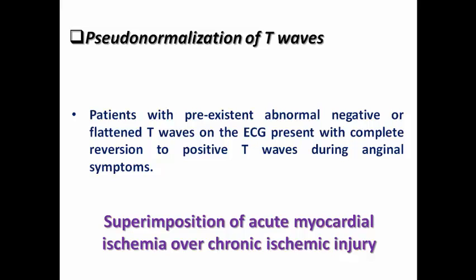So he has a superimposition of acute myocardial ischemia over chronic ischemic injury. Most probably this patient had chronic ischemia and then when he had an acute ischemia, he had positive T wave.